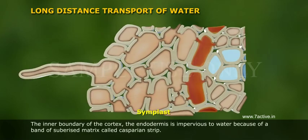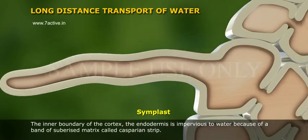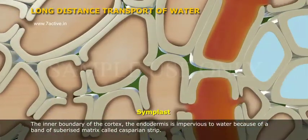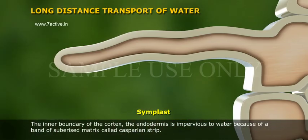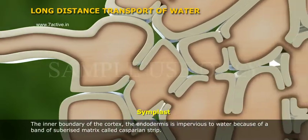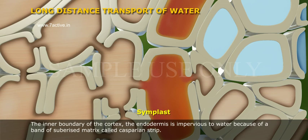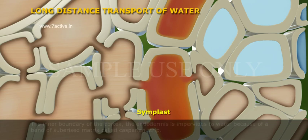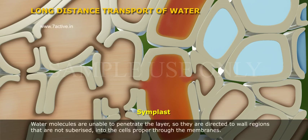The inner boundary of the cortex, the endodermis, is impervious to water because of a band of suberized matrix called the Casparian strip. Water molecules are unable to penetrate this layer, so they are directed to wall regions that are not suberized, into the cells proper through the membranes.